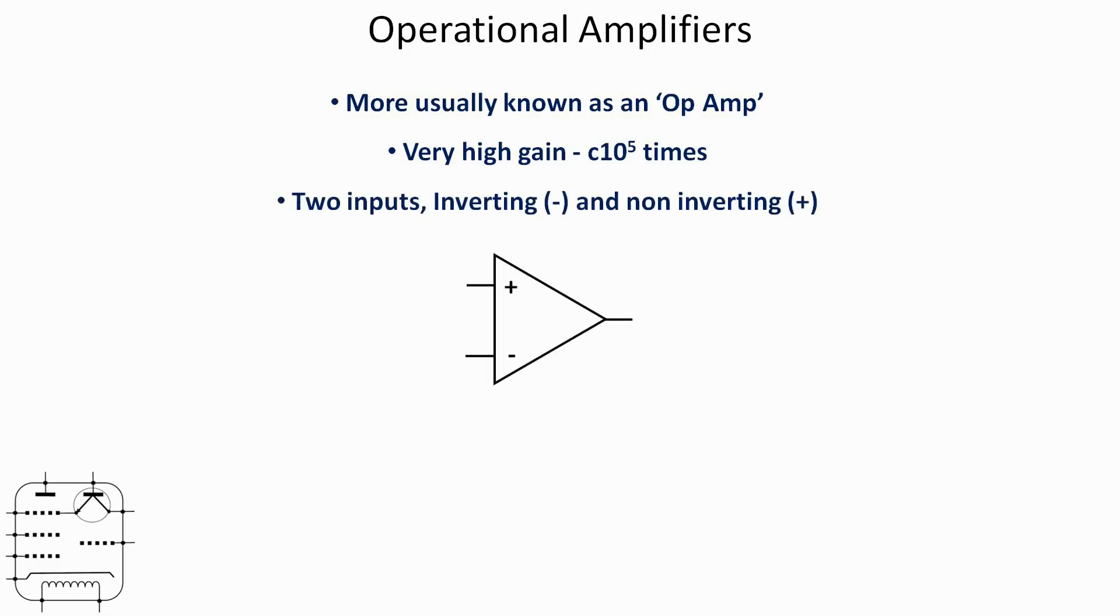They've got two inputs: inverting marked with a minus and non-inverting marked with a plus. Just bear in mind when you're looking at these things in circuit diagrams that the plus isn't always at the top—it can be either way up. The difference between the inputs is the amplified output.